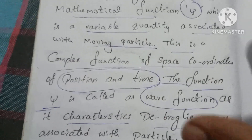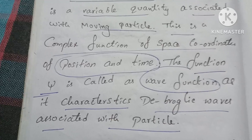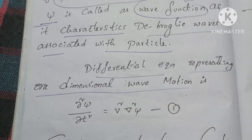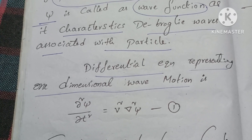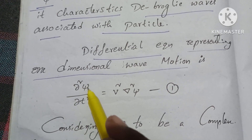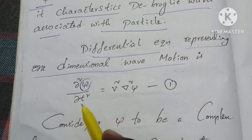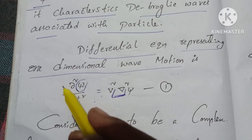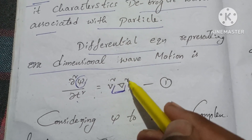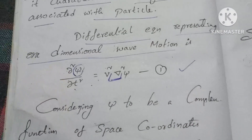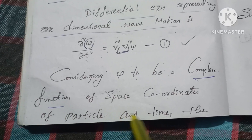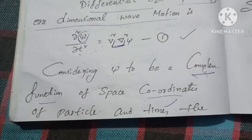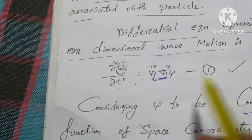Equation number one is the time-dependent equation. This equation represents one-dimensional wave motion. The one-dimensional wave motion equation is: ∂²ψ/∂t² = v² · ∂²ψ/∂x². Consider this ψ, which is the complex function of particle coordinates and time.